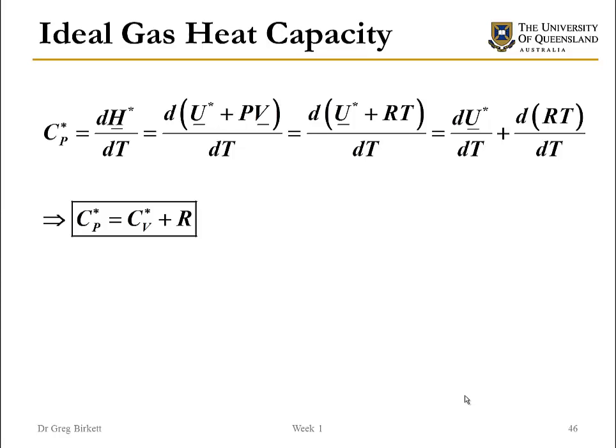And so not only do we have the internal energy and the enthalpy independent of volume and pressure for an ideal gas, this allows us to actually set up a relationship between the constant pressure heat capacity and the constant volume heat capacity. And that relationship is given here. So once you do the derivation, it's a very simple relationship.